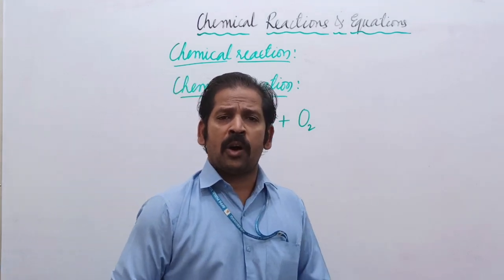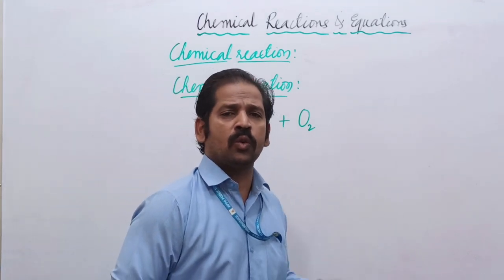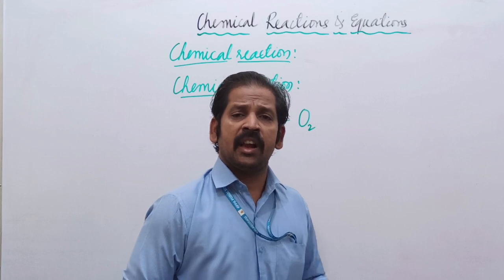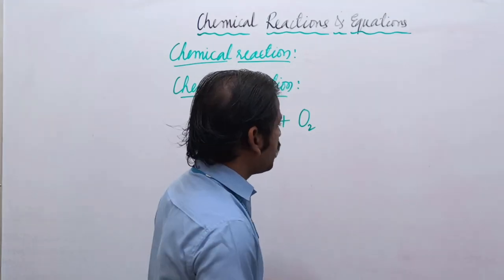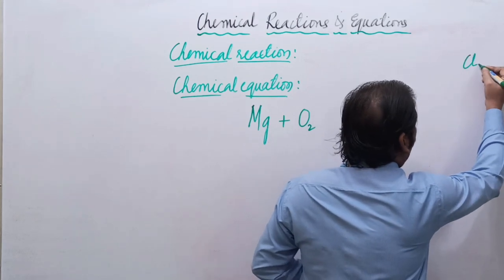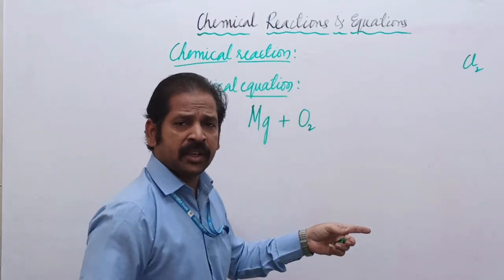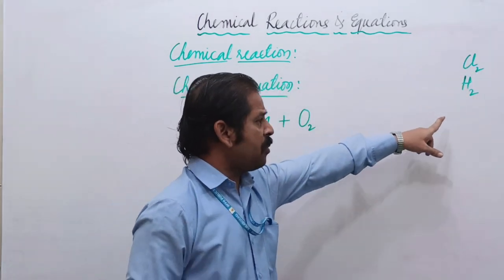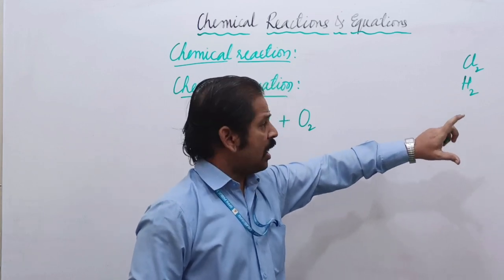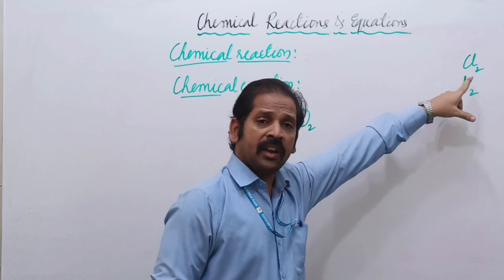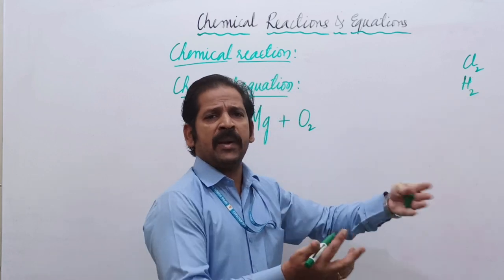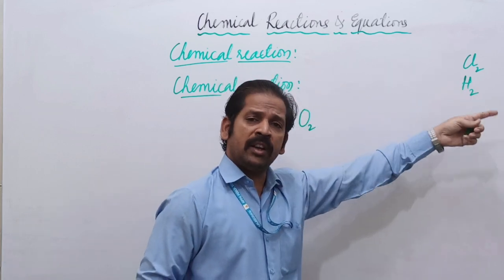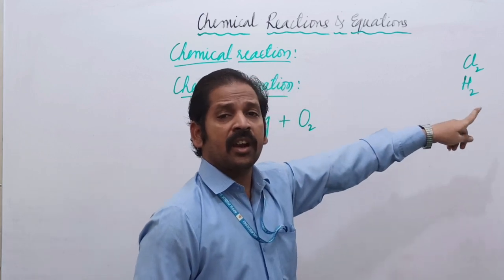Oxygen exists as O2 in nature. Apart from oxygen, how many other elements are in diatomic form in nature? We have chlorine (Cl2), hydrogen (H2) — these are diatomic. When they appear as a single element, they are in diatomic form. When writing reactions, we should not write just H; we should write H2.